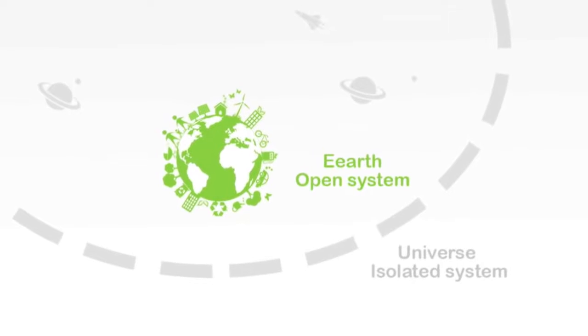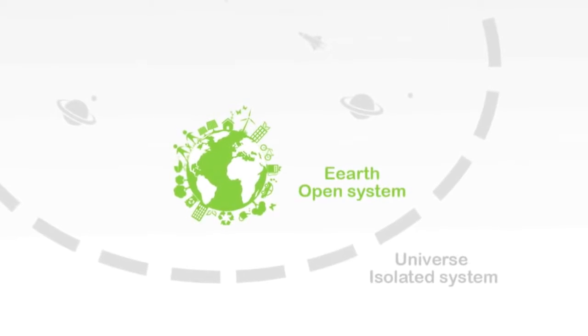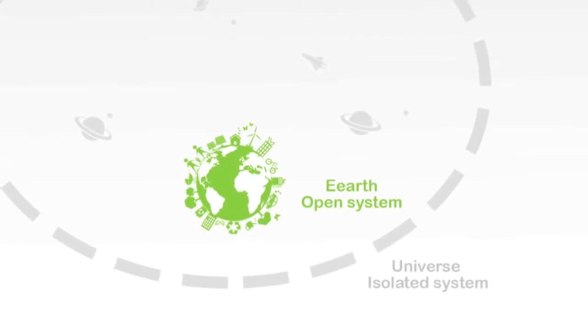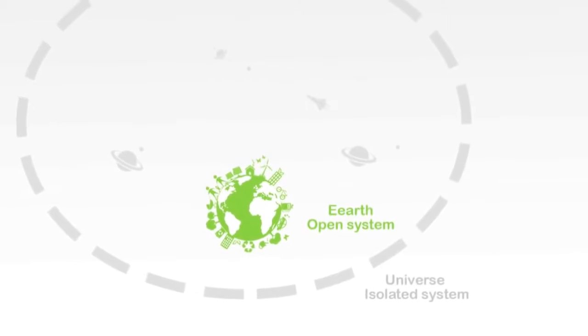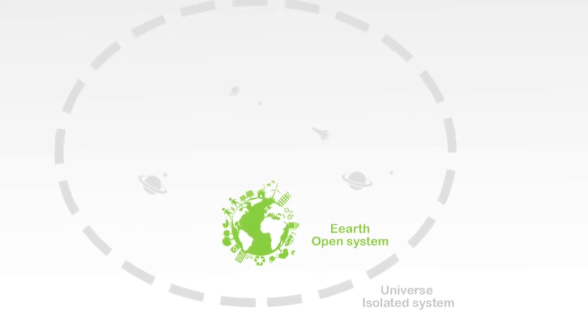A system can be either open or isolated. Isolated systems do not interact with their environment, but most systems are open, meaning that there is an exchange of energy and resources between the system and its environment.